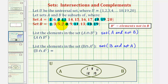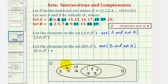Which means notice how the elements six, fourteen, fifteen, sixteen, seventeen, and twenty would only be in set A, which would be in this region here. So we have six, fourteen, fifteen, sixteen, seventeen, and twenty that are only in A.